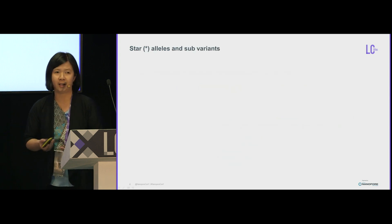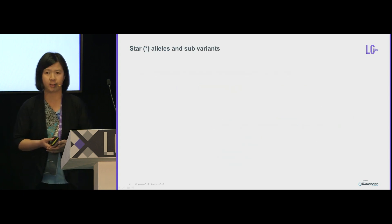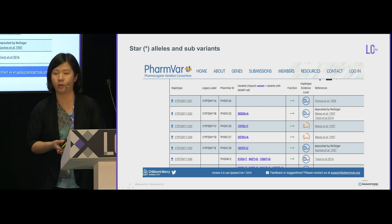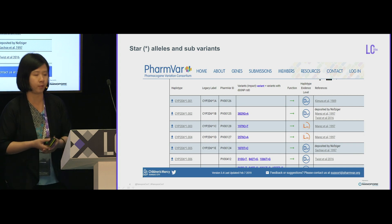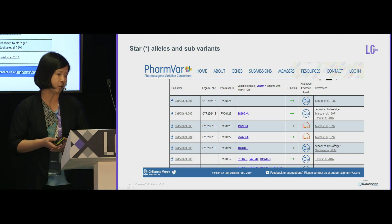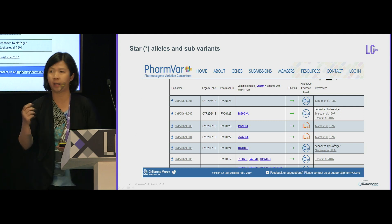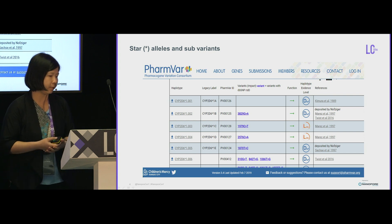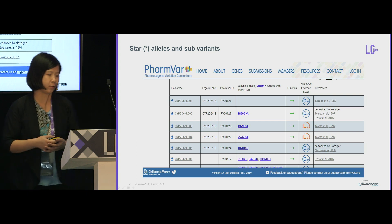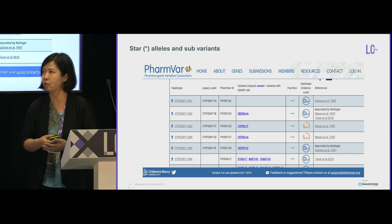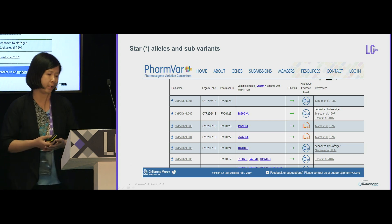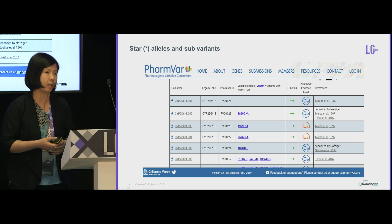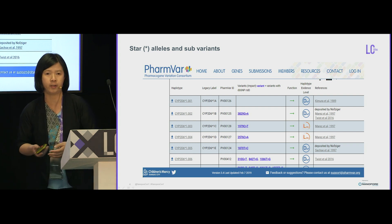I'm going to use the term 'star alleles' quite a lot throughout the presentation. It's a standard nomenclature used in pharmacogenetics to enumerate the different haplotypes of pharmacogenes, marked by the gene name followed by an asterisk and a number. Each star allele usually has several sub-variants, each characterized by one or more genetic variants, and each star allele can be linked to a certain functional phenotype.